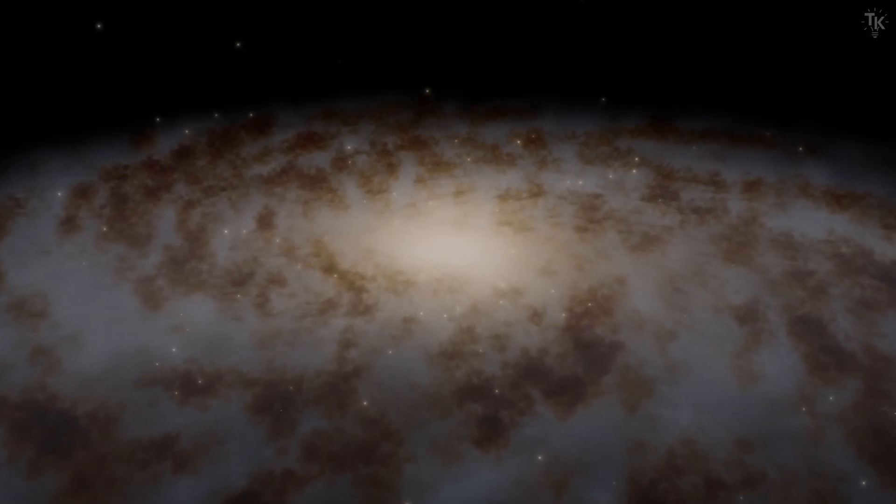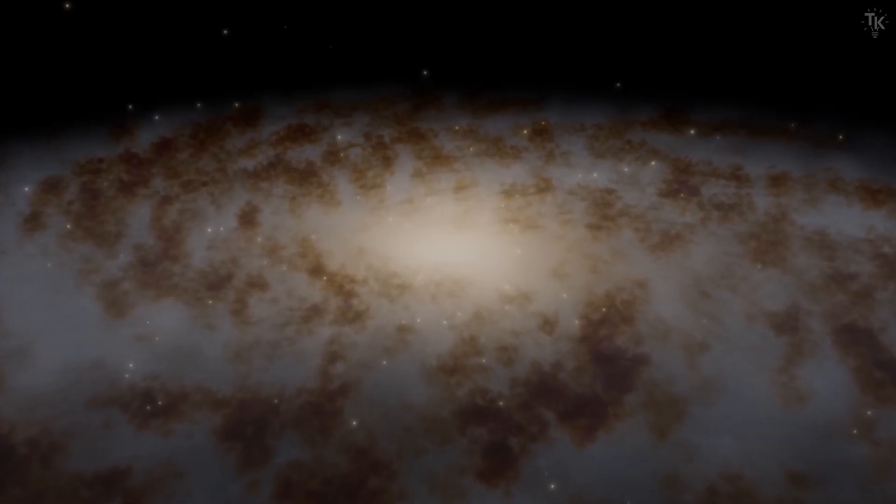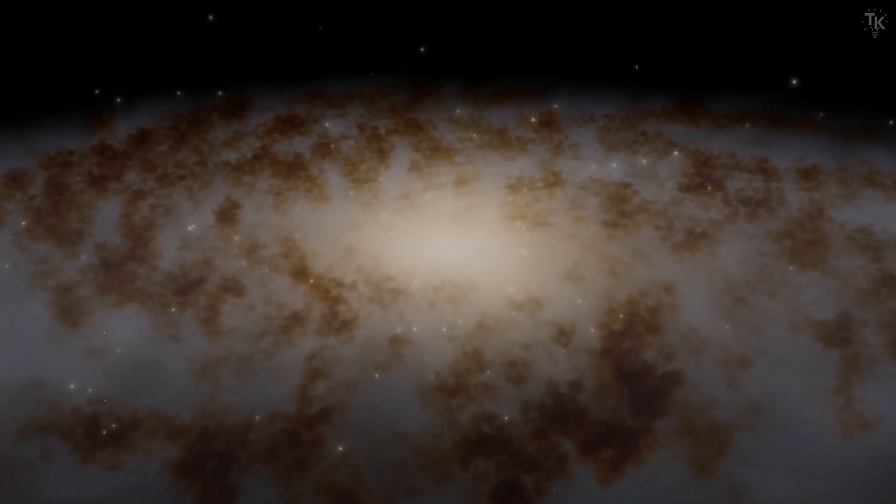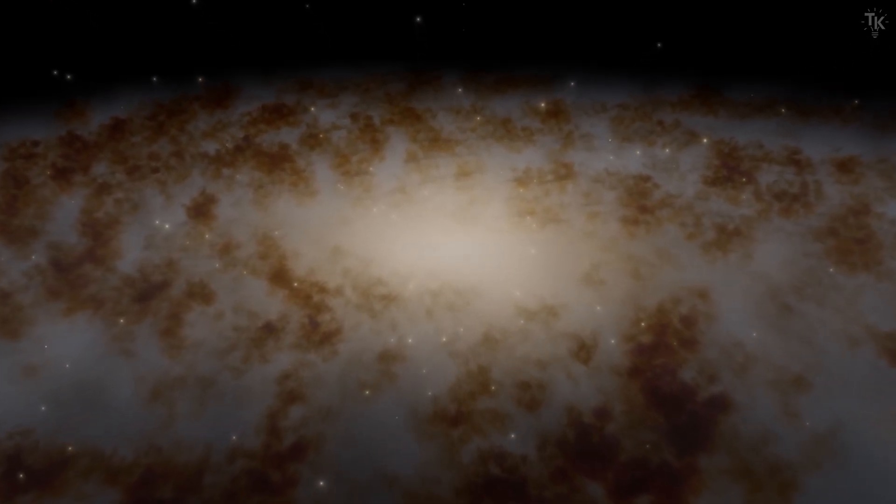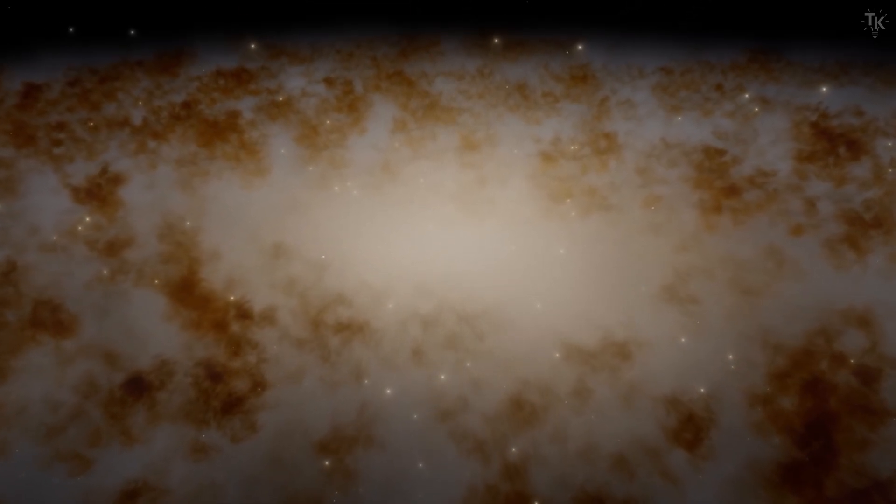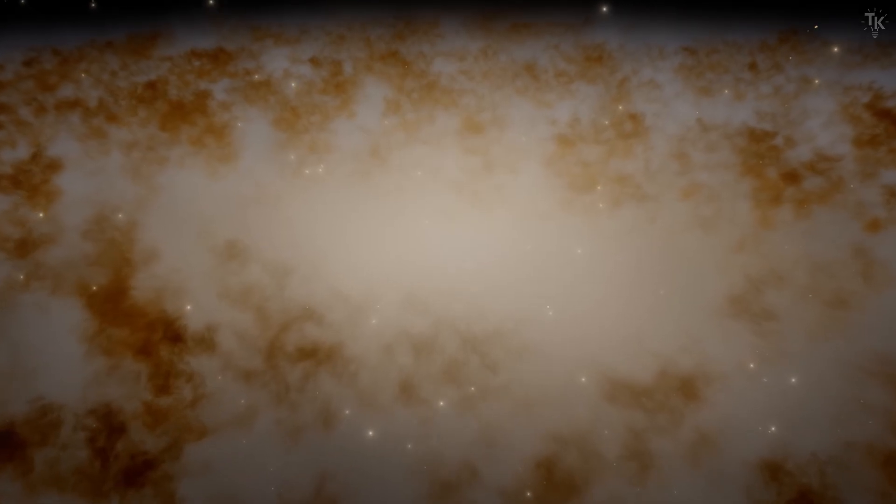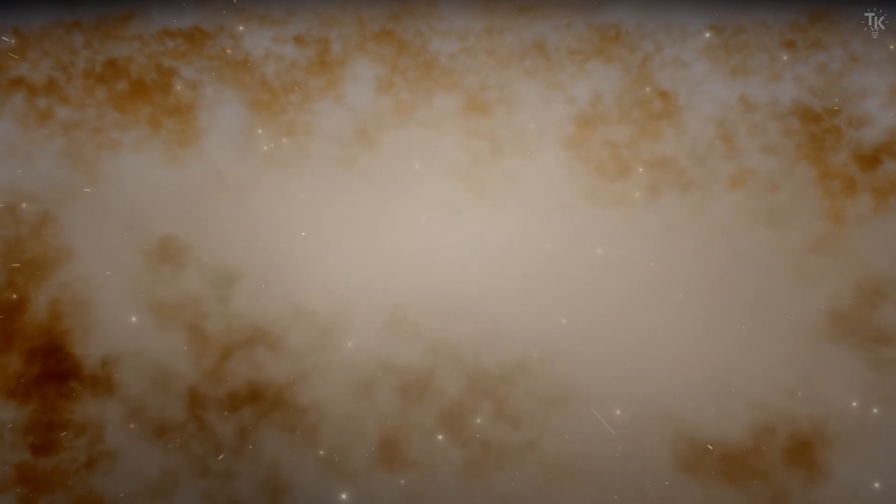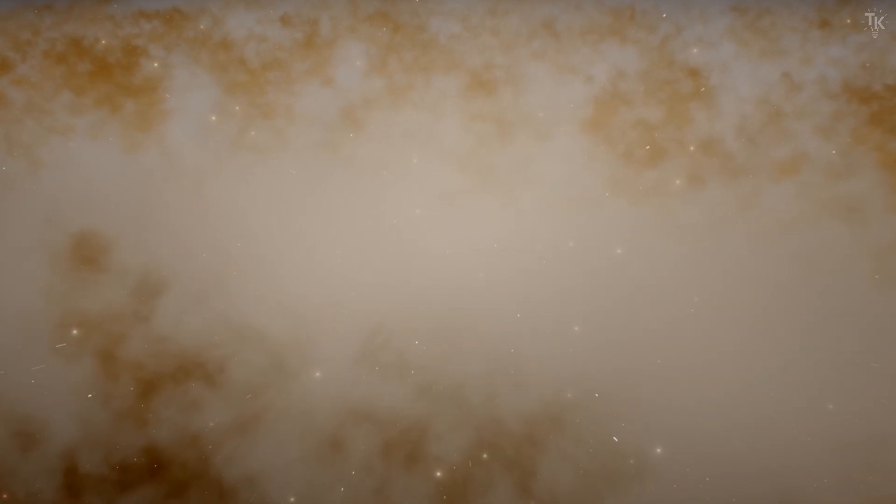But what about the stars and planets inside them? When galaxies are stirred up, do stars and planets smash into one another and shatter? The answer depends on the density of the galaxy. The densest part of a galaxy is its center. There, the average distance between stars is about 0.03 light years.